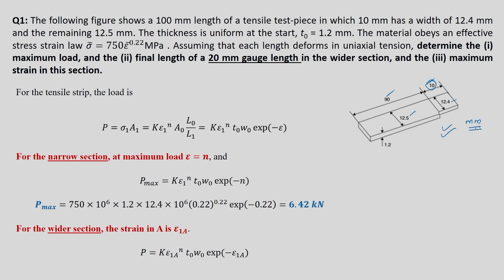All dimensions are in mm. The entire sheet has got uniform thickness of 1.2 mm, so T₀ is 1.2 mm. This material obeys a stress-strain law: sigma equals 750 epsilon-bar power 0.22 MPa. We assume that these two regions deform in uniaxial tension. The question is to determine the maximum load and the final length of a 20 mm gauge length in the wider section.